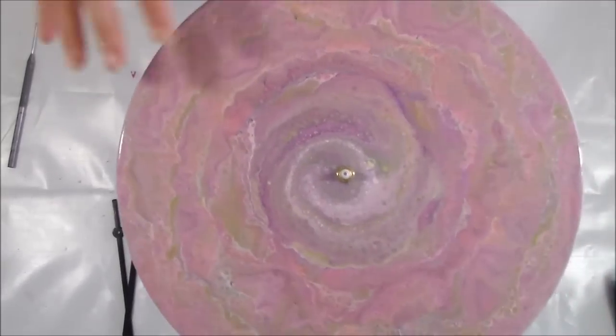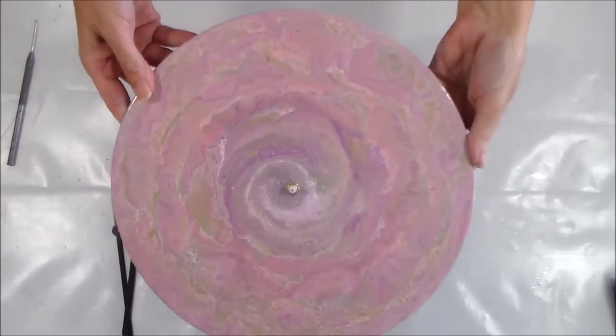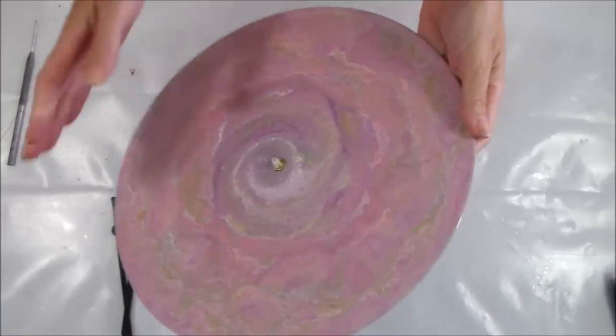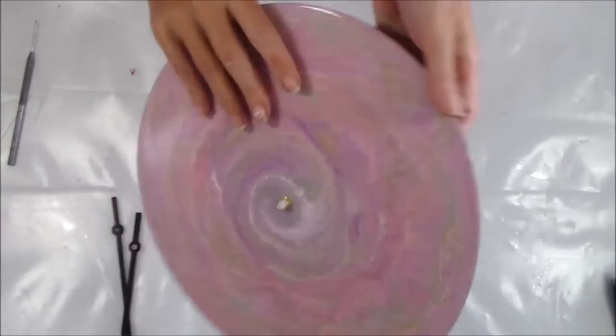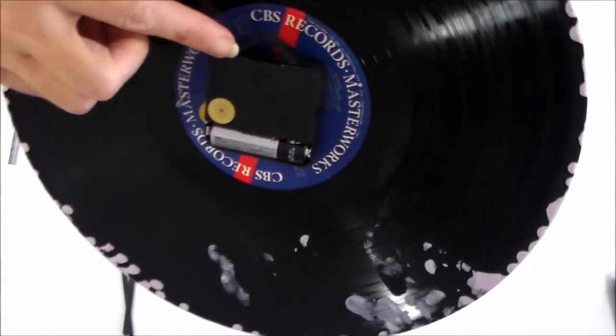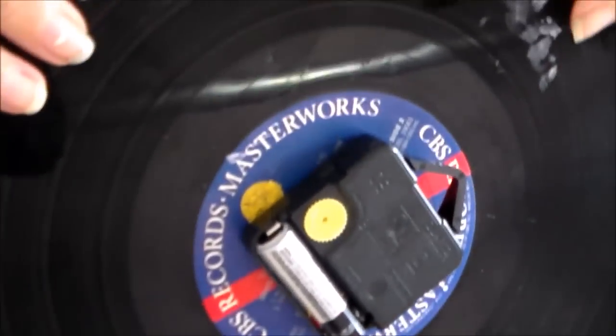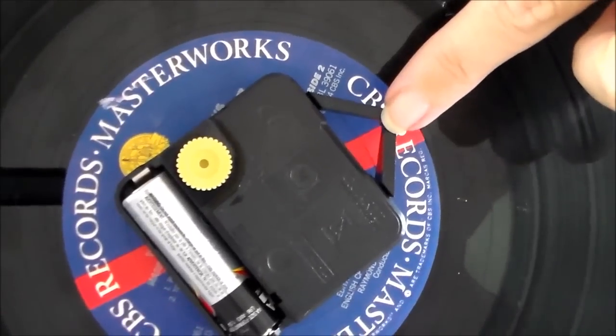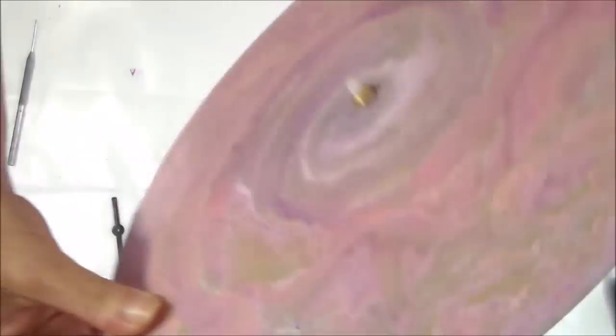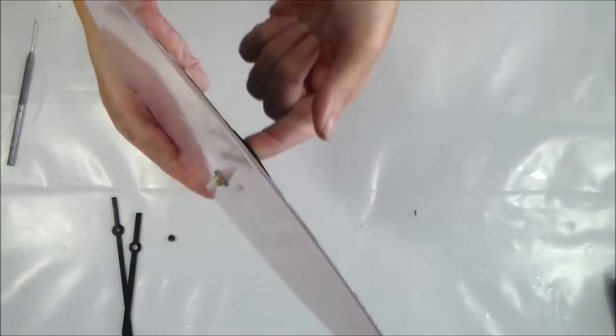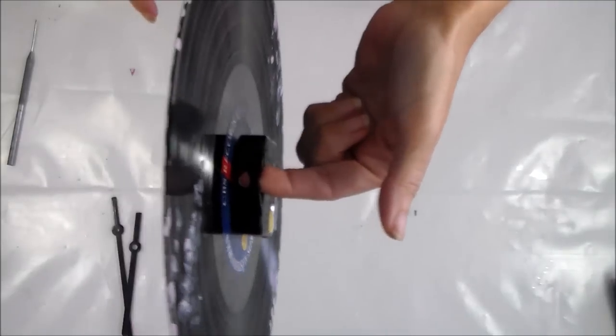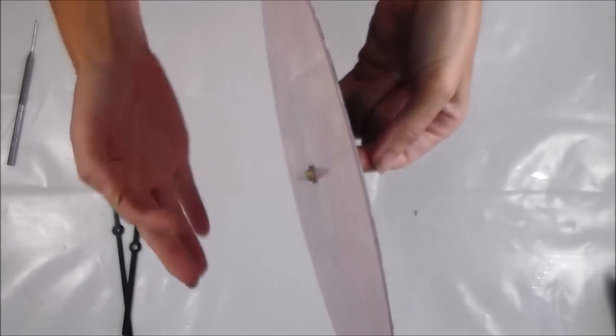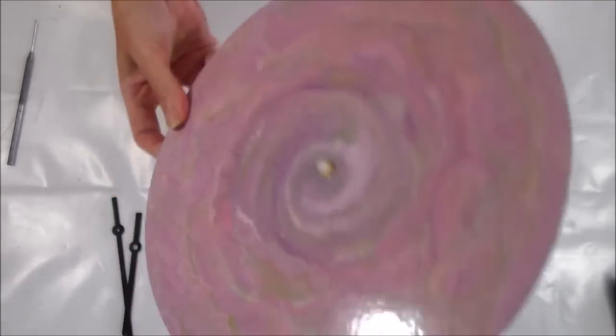Now of course if you have a design on your record or whatever you've poured that you want to have an up and a down, the clock mechanism has on the back here a little hanging hook. So that would be the top of your mechanism. So if you have a way that you prefer your design to be up, make sure that when you do it that you hang it so that your design is showing correctly from the front.